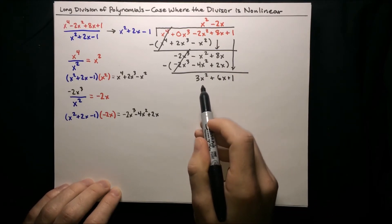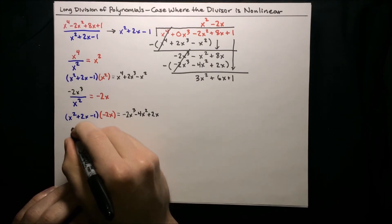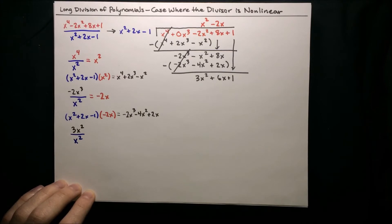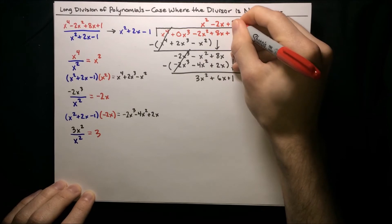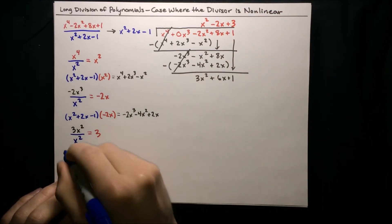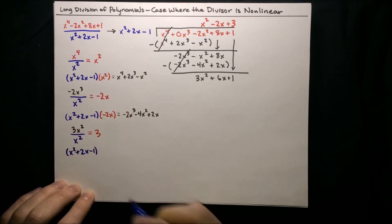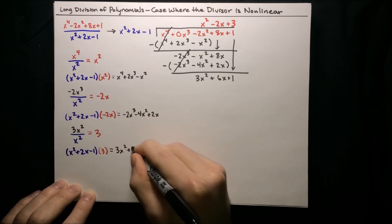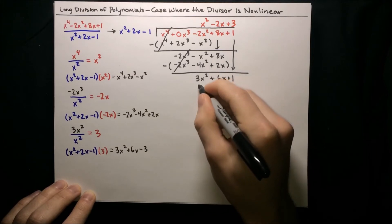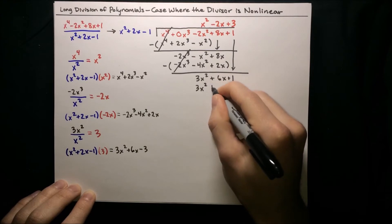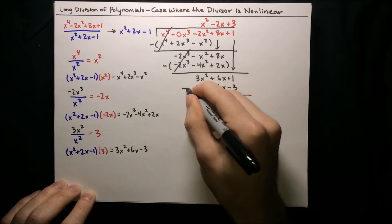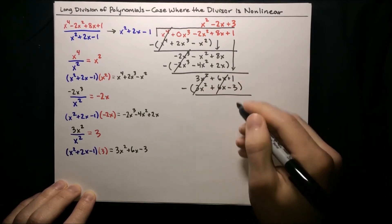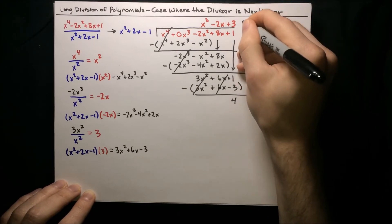Now we just have to do one more iteration of this process. Take the leading term 3x squared, divide it by the highest degree term in the divisor, which is x squared, and that equals 3. Put that up with the rest of our quotient. Now multiply the divisor by 3: x squared plus 2x minus 1 times 3 yields 3x squared plus 6x minus 3. Write that underneath and subtract. So 3x squared minus 3x squared cancels, 6x minus 6x cancels, and 1 minus negative 3 is 1 plus 3, or 4. So that's our remainder: 4.